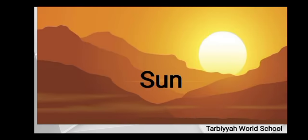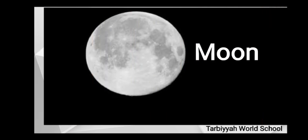You can see the picture of the sun. The sun is yellow in color and the shape of the sun is round like a ball. Now see the picture of the moon. The moon is white in color and the shape of the moon is also round like a ball.